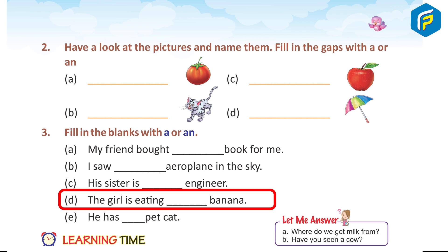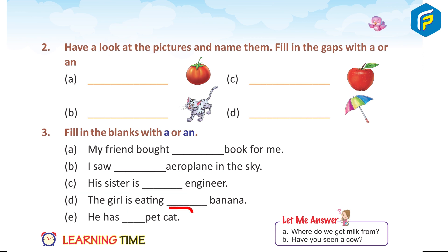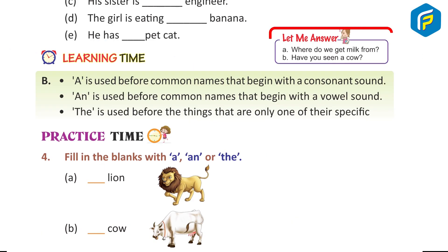D) The girl is eating a banana — answer: a. E) He has a pet cat — answer: a. Let Me Answer: A) Where do we get milk from? B) Have you seen a cow?